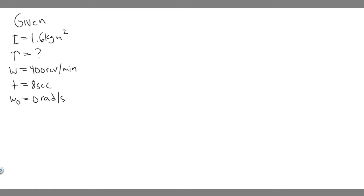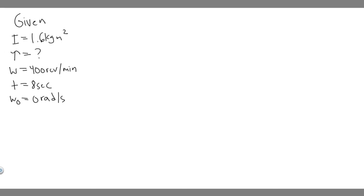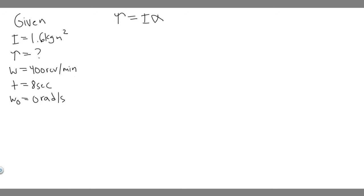So how do we solve this? We have inertia and we want to find torque, so we need to relate those variables. The formula we'll use is torque equals I times alpha. We can solve for torque if we have the inertia and alpha. They've given us all these rotational kinematic variables — omega, time, and omega₀ — so we should be able to solve for alpha first, then multiply by inertia to get the required torque.